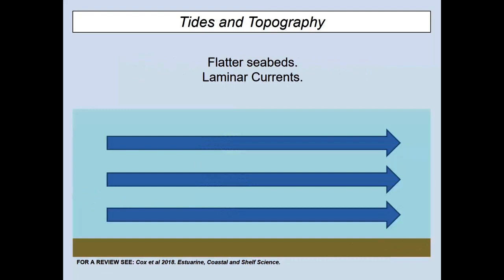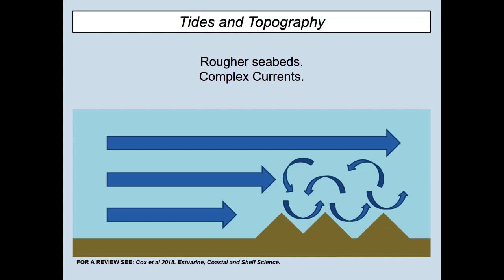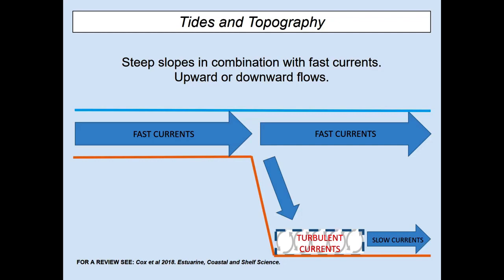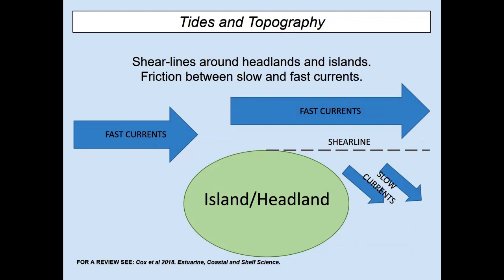Where you have quite flat seabeds you get laminar currents — not much going on — but as soon as you introduce complex seabed, you tend to get circular, more complex currents. Fast currents interacting with a steep slope create very turbulent currents. In coastal environments, fast currents interacting with an island or headland get accelerated around the edge; in the wake you get slow currents, and between these two water masses you get a quite prominent shear line, visible as choppy white water — especially on a calm day. This creates a mosaic pattern of calm, choppy, fast, and slow water patches, each characterized by very different physical properties.